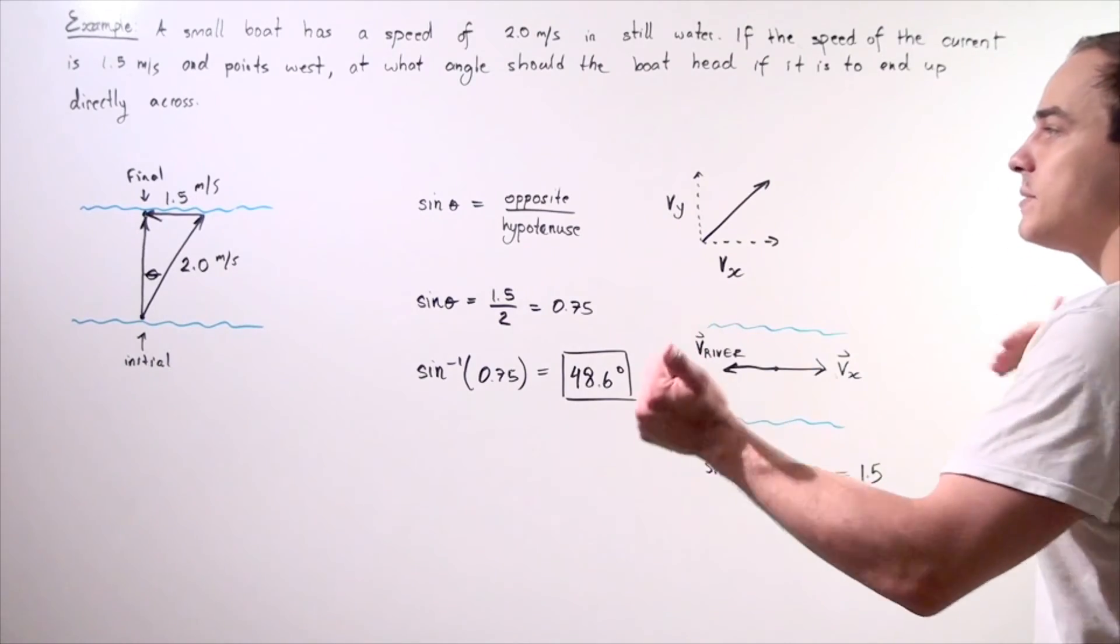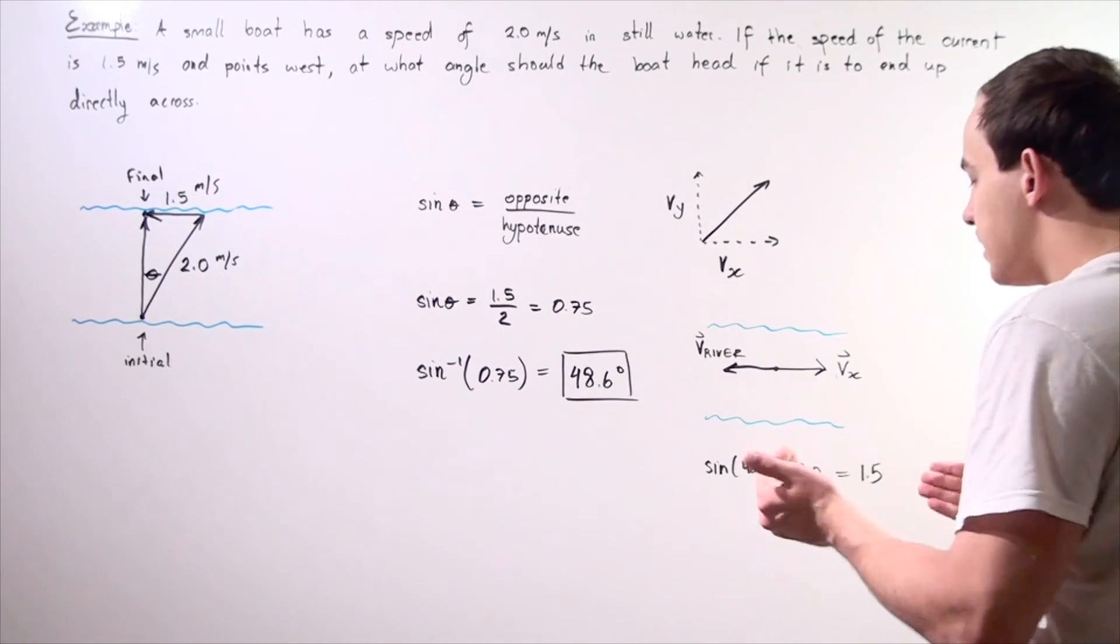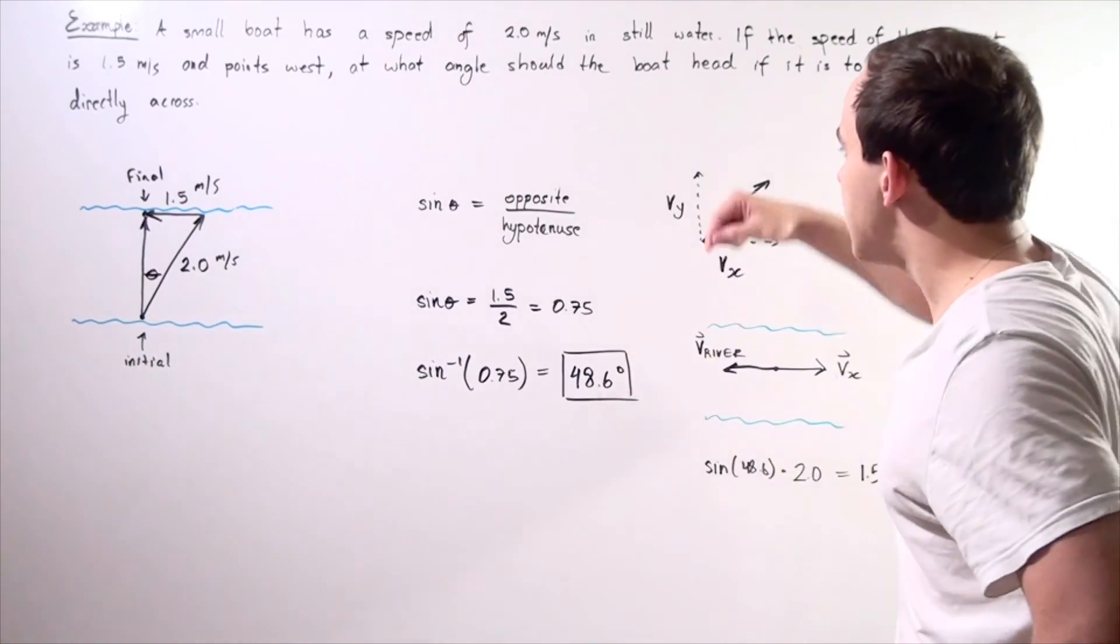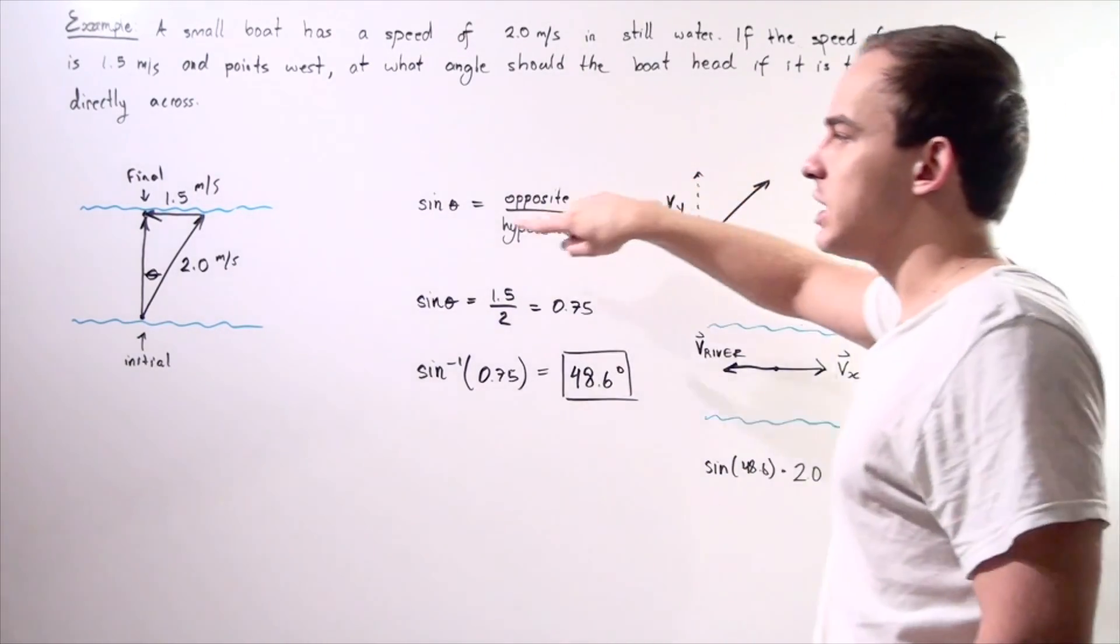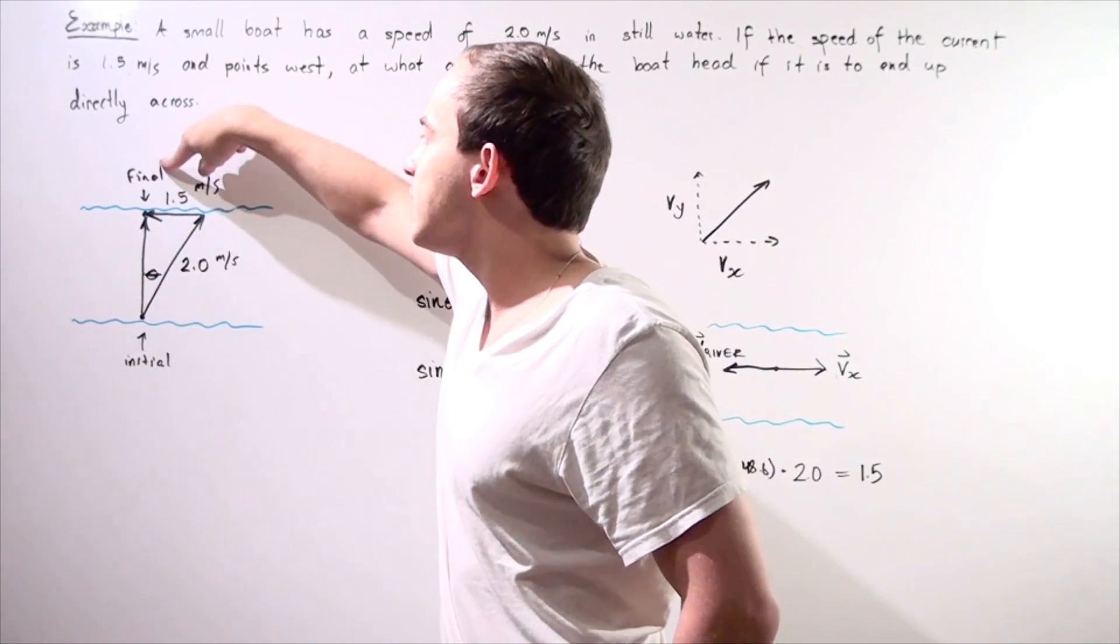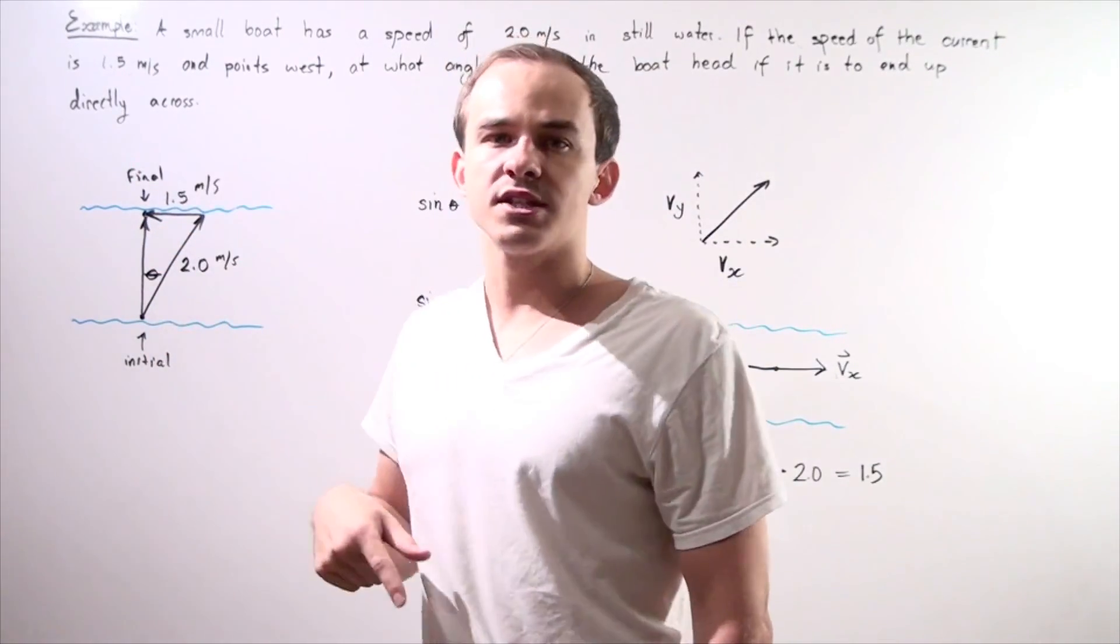That means we add them up, they will cancel out, and we're going to be left with this component along the y direction. And so our boat will go from our initial to final position directly across the river.